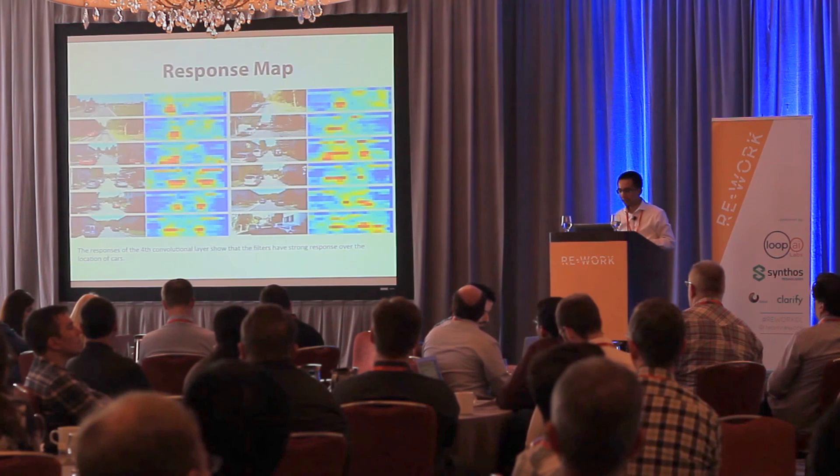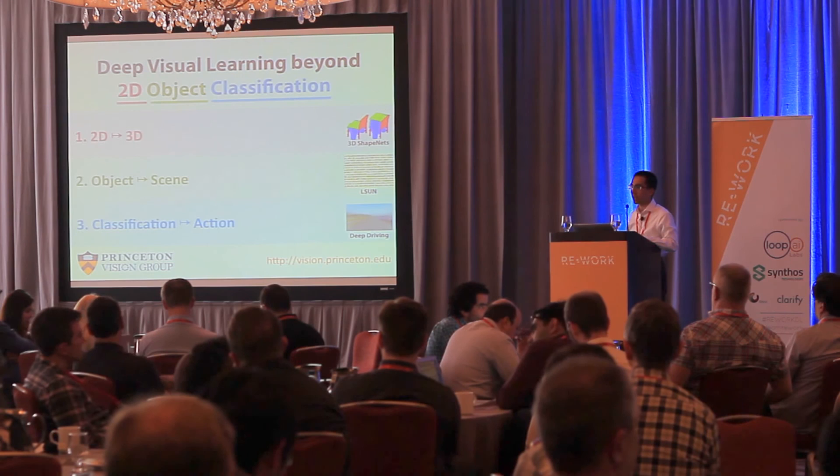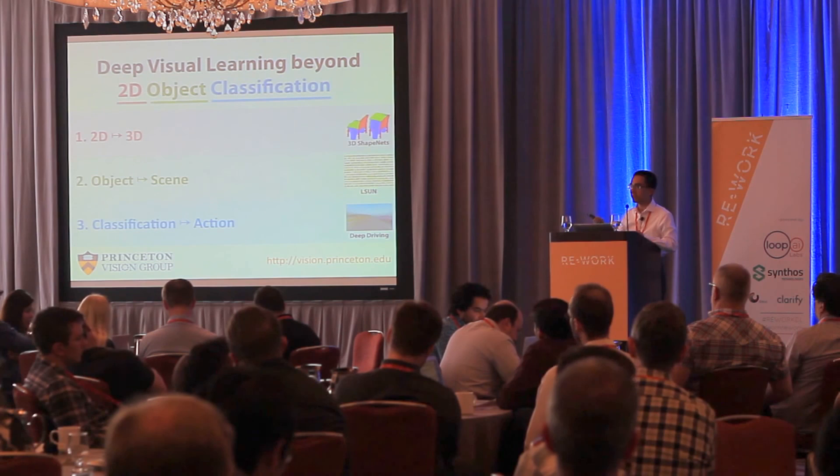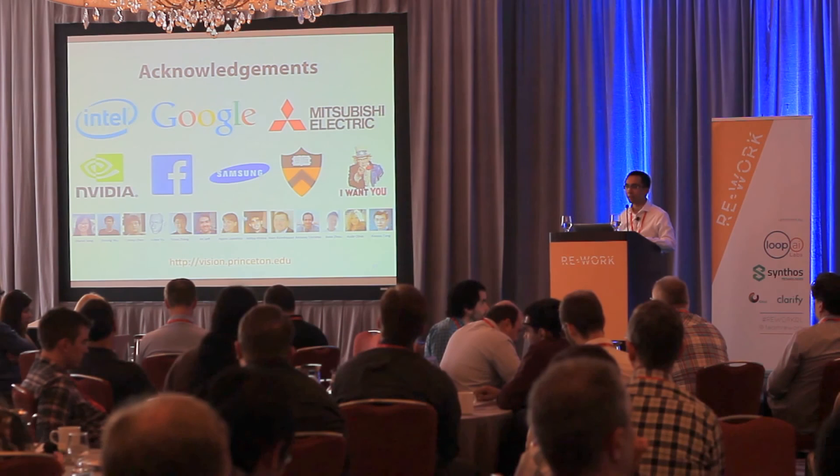To quickly summarize: in this talk I discussed how we move visual learning beyond 2D object classification — by covering 3D deep learning, by building a very large dataset with 3 million photos just for scene understanding to train a better scene classifier, and by using deep learning for autonomous driving. All the data and source code are available online, so you can check our website.